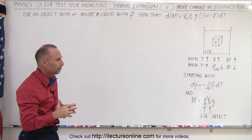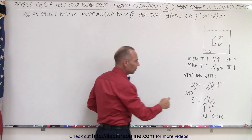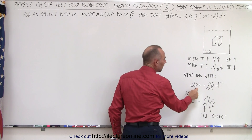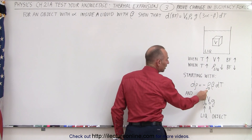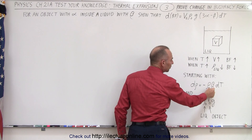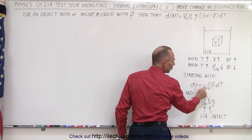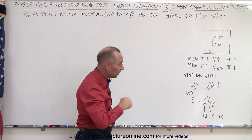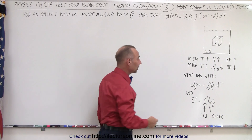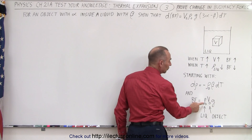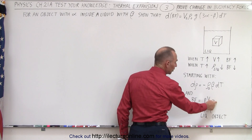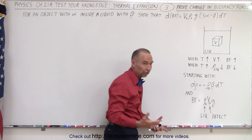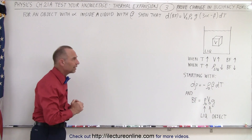So how do we do that? We want to start with the concept shown in the previous video: the change in the density is equal to the initial density times the volume coefficient of expansion times the change in temperature, with a negative sign, because as the temperature goes up, the density goes down. And we know that the buoyancy force is equal to the density times the volume times G, where the density is the density of the liquid, the volume is the volume of the object, and G is the acceleration due to gravity.